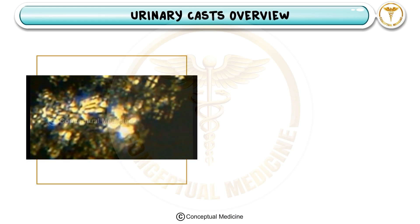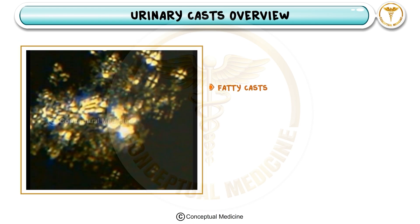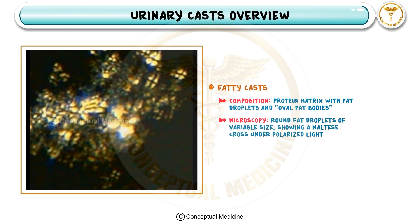Another important type is the fatty cast, which contains fat droplets embedded in the protein matrix. These casts are easily recognizable under polarized light due to their characteristic maltese cross appearance. Fatty casts are almost always associated with nephrotic syndrome, a condition where the kidneys lose a significant amount of protein in the urine.